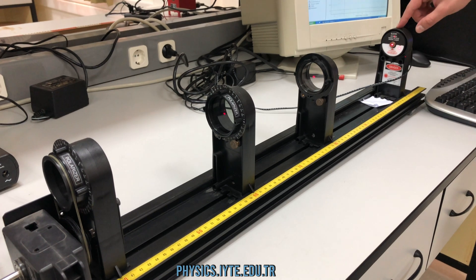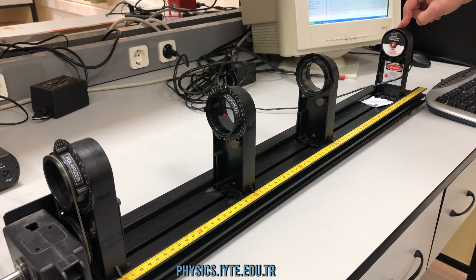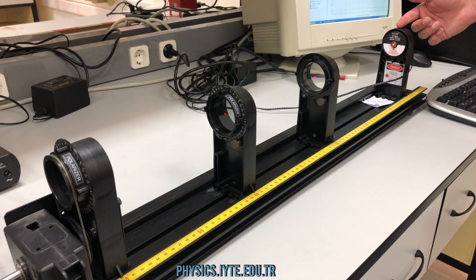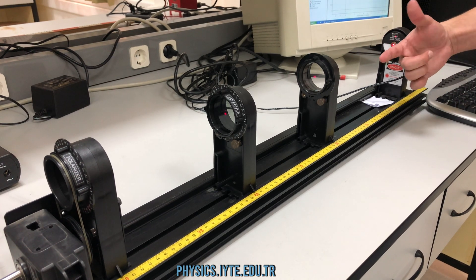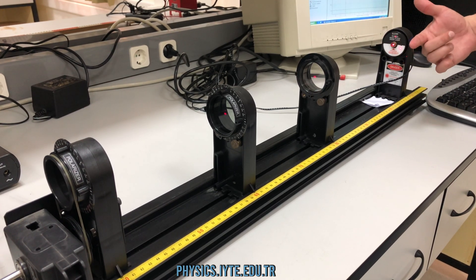Here we have a diode laser which creates an unpolarized light. By unpolarized, we mean the electric field of the light wave points in all directions perpendicular to the direction of the motion.